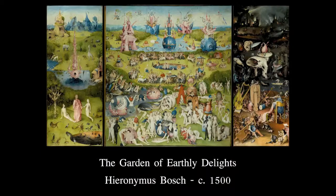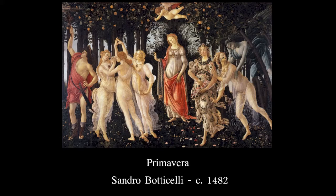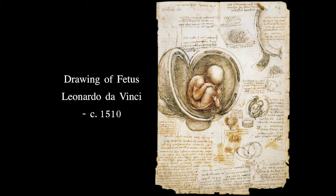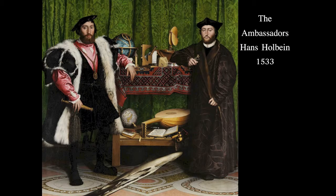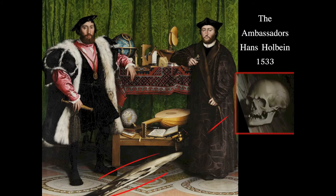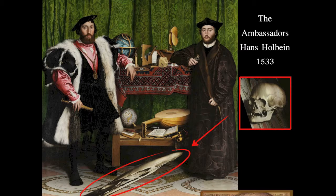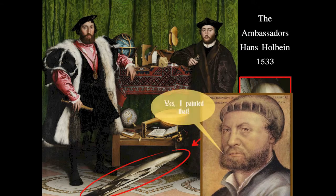This brings us to the Renaissance, which introduced abstract storytelling and the use of myth in art, as well as the first use of academic art, and new painting techniques — like this anamorphic skull in this painting by Hans Holbein the Younger.